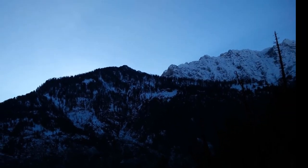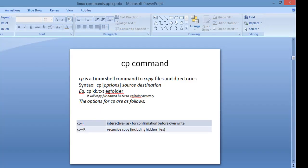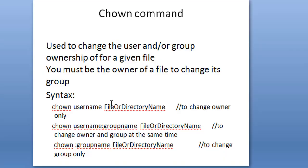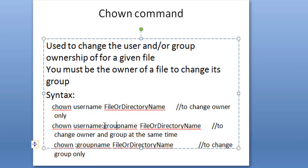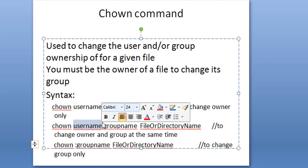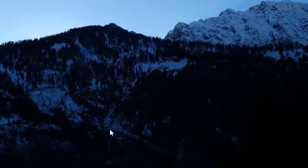I want to tell you more about the chown command. The full syntax is: chown username:groupname file-or-directory-name. If you want to change the username only, you skip the group portion — just write chown username then the file or directory name. If you want to change the group name only, you skip the username. Writing a colon with a name tells the computer it's a group name; writing a name without a colon means it's a username.